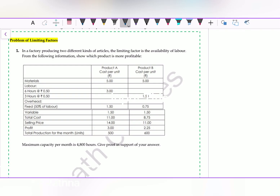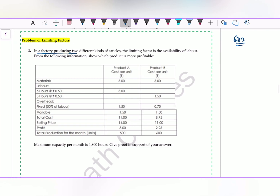Hello friends, I am CMA Ratna. Here we are on the second part of marginal costing. The first part was for both CMA first group and second group students. If you are a CA student, you can also watch this video — it is equally important for you. For CMA students, this is for the second group portion. In a factory producing two kinds of articles, the limiting factor is the availability of labor. From the following information, show which product is more profitable. There are two products, Product A and Product B. Material, labor cost — 3 rupees for Product A and 1.5 rupees for Product B — fixed overhead, variable overhead, total cost, selling price, profit, and total production for the month are all given.